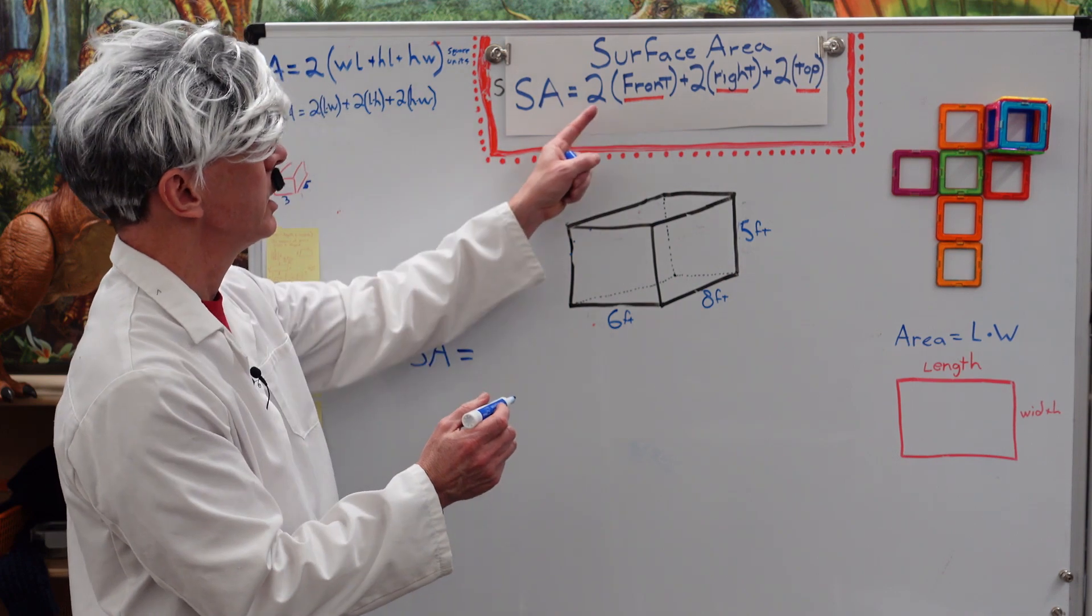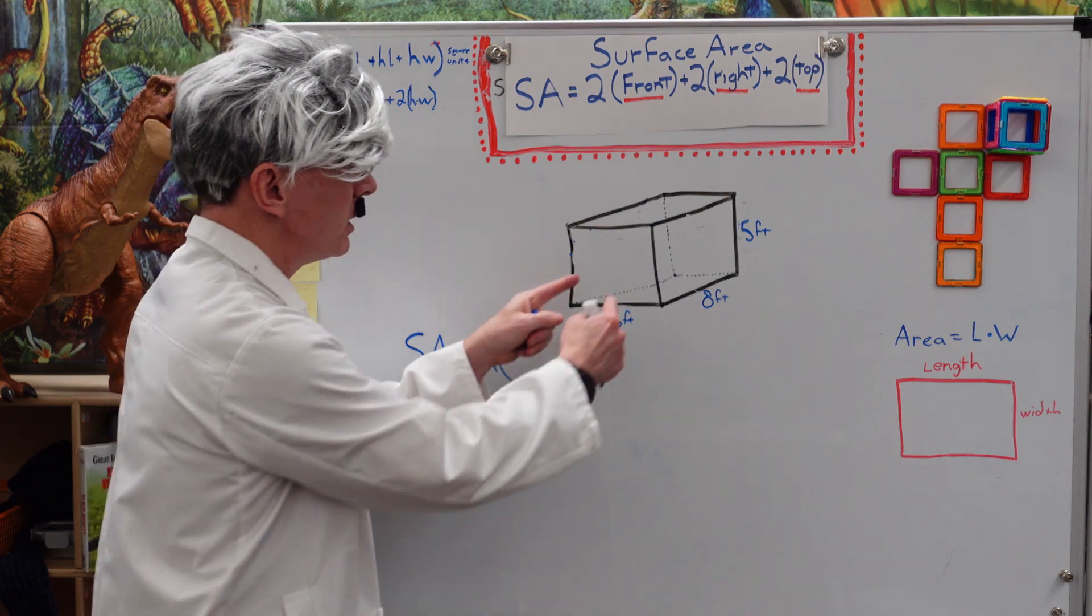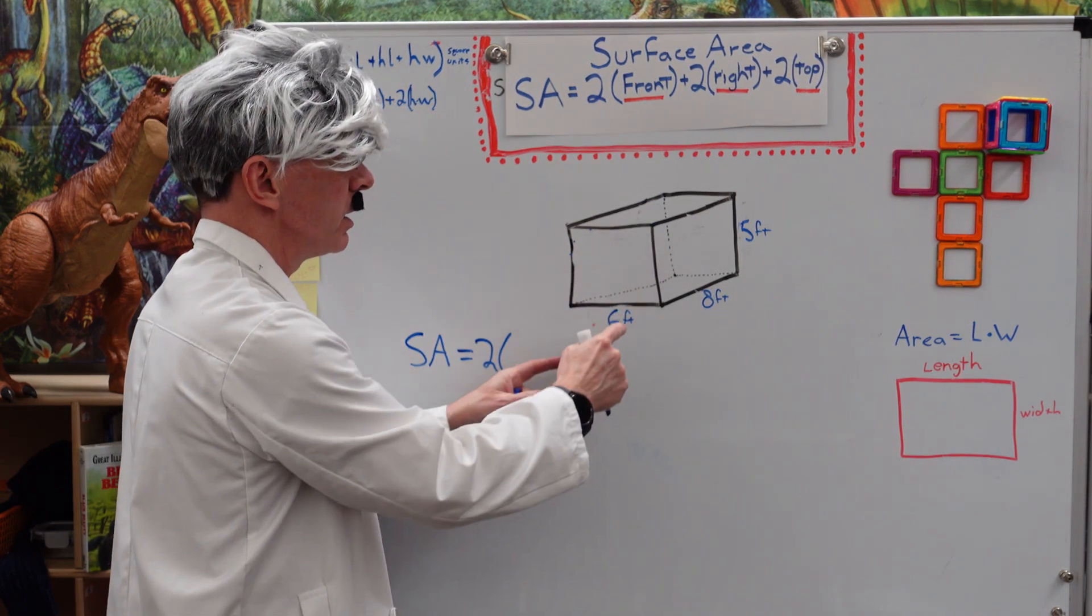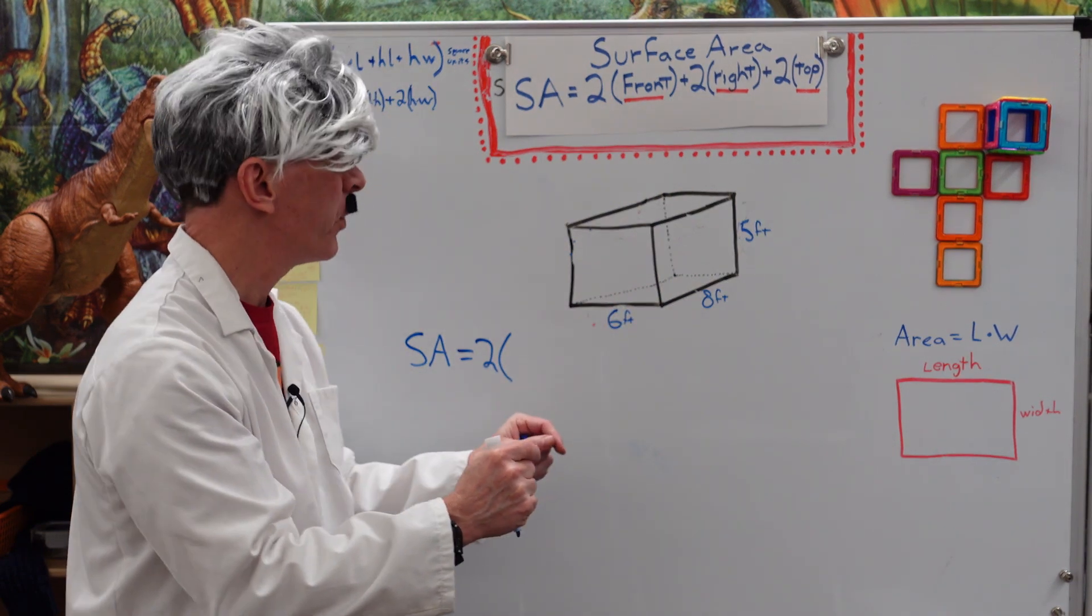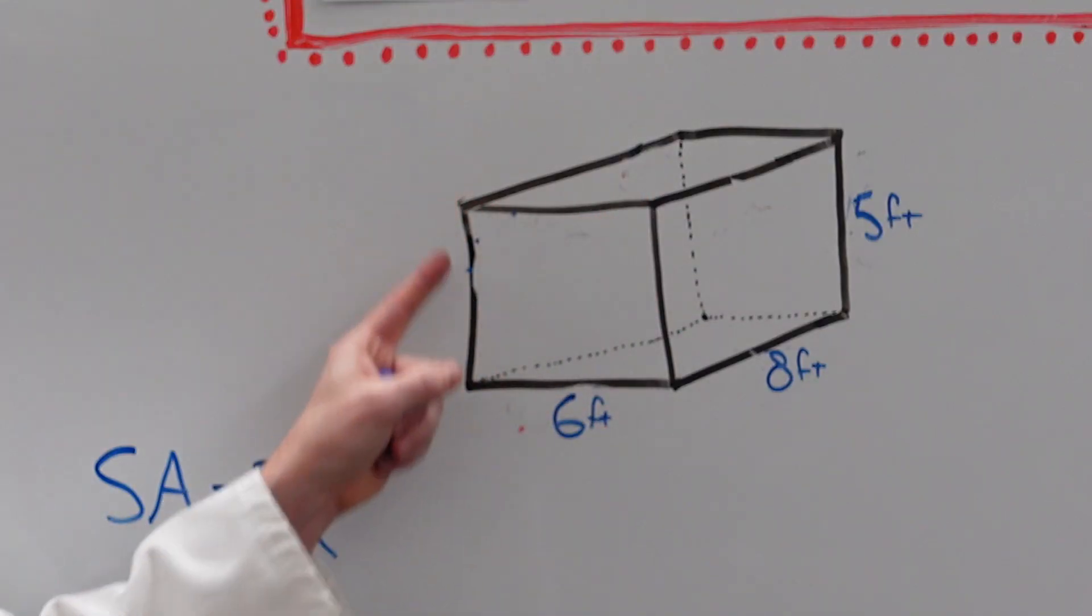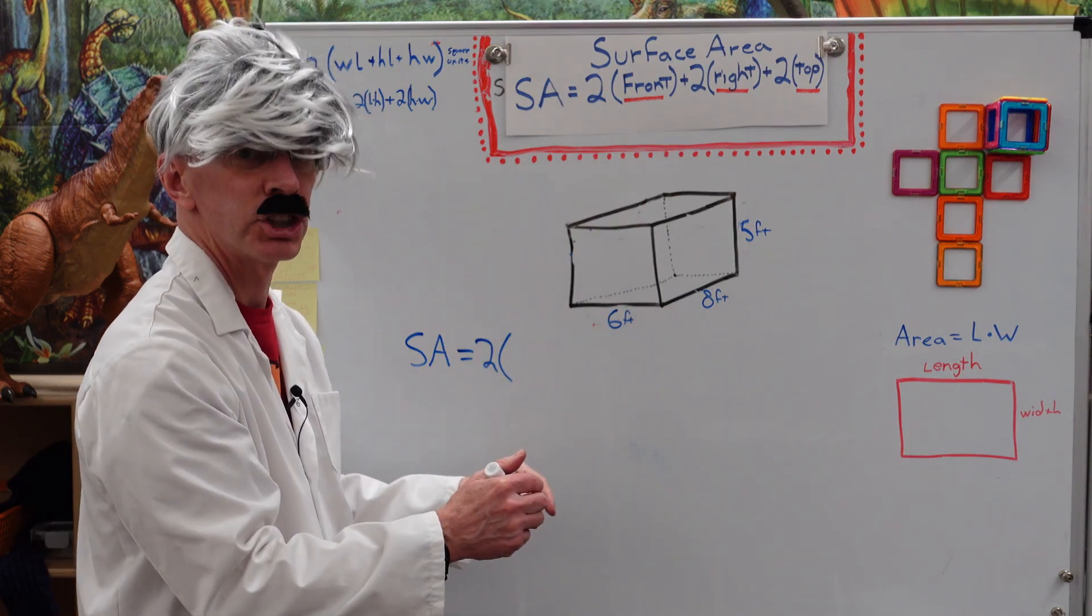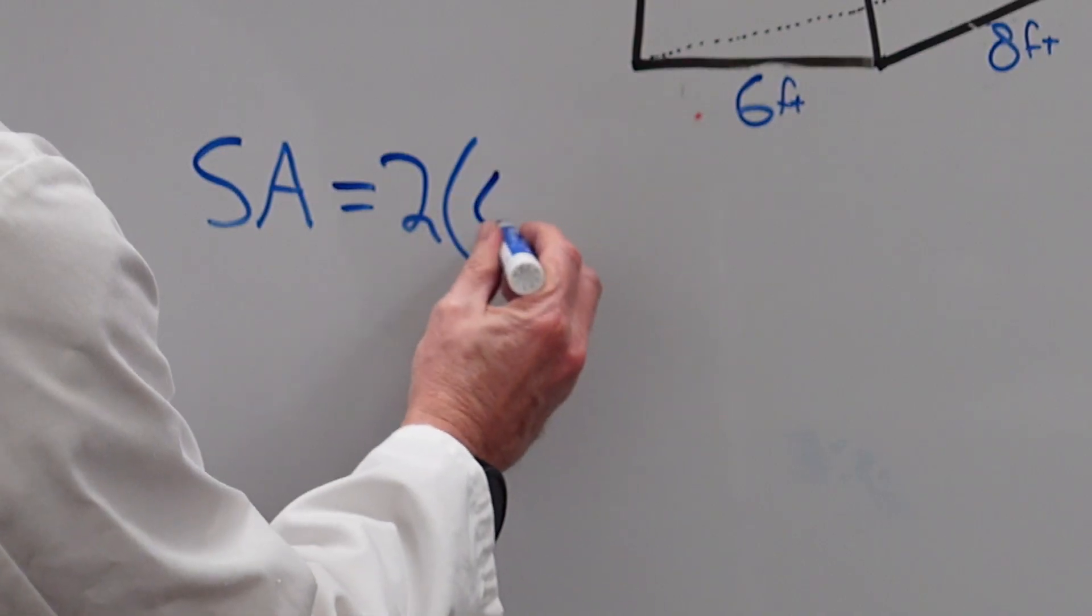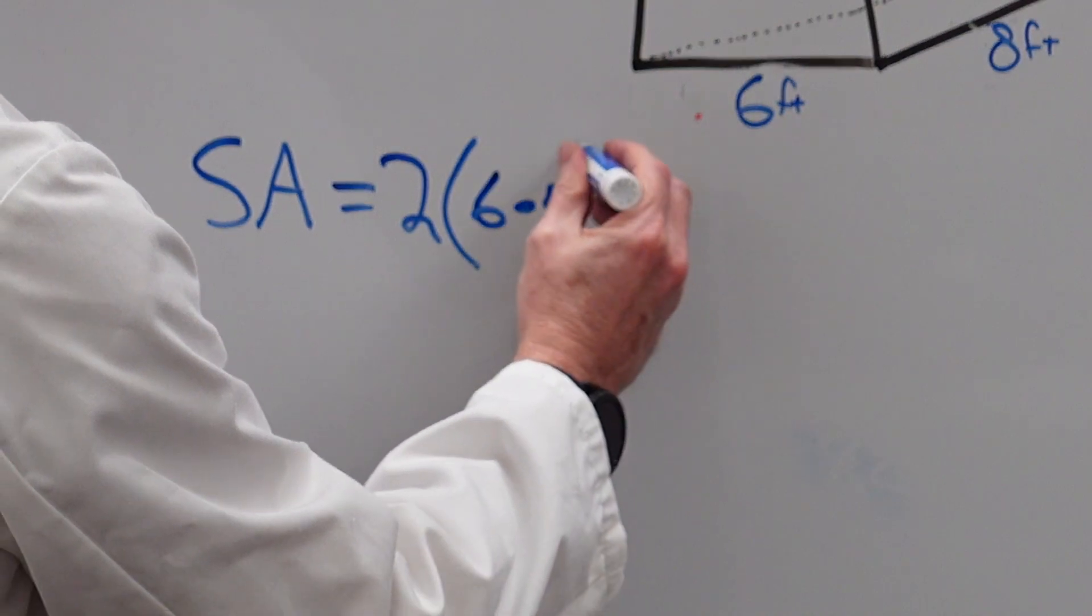Surface area equals 2 times the front. This right here is the front. This area right here is length times width. Can you say width? So, I have 6 right here. This is 5 feet here, 5 feet here. Same size length segment. Line segment. So, I put 6 times 5. Very good.